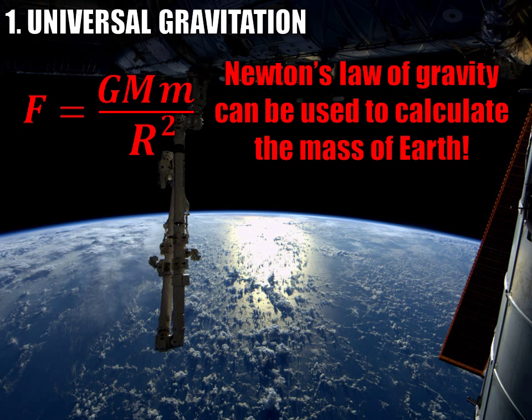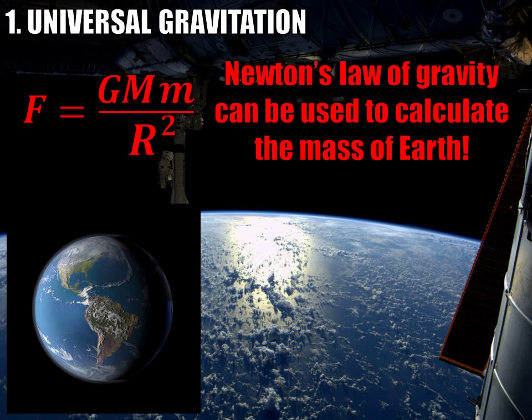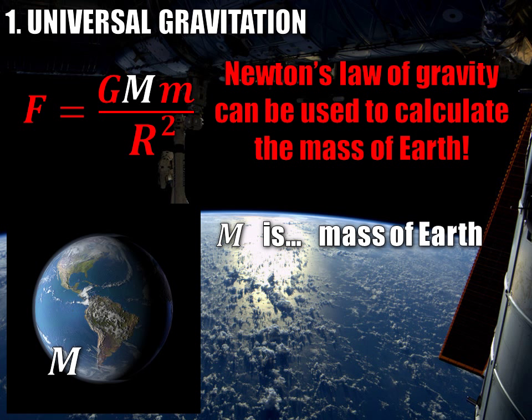All we have to do is apply this equation to the Earth. When we apply this equation to the Earth, these variables take on a very special meaning, so let's first make sure we understand what that meaning is. To begin with, the first mass is the mass of the Earth — and that's what we want to calculate. The universal gravitation equation has within it what we're trying to find: the mass of the Earth.